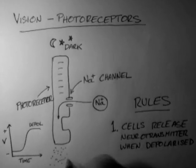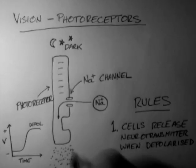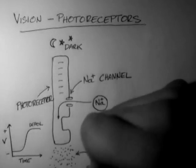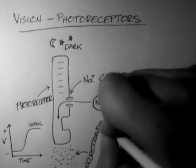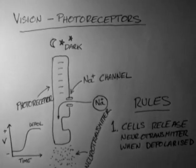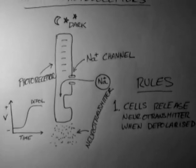So according to rule number one, this cell will have to release neurotransmitter. And there it is coming out the bottom.